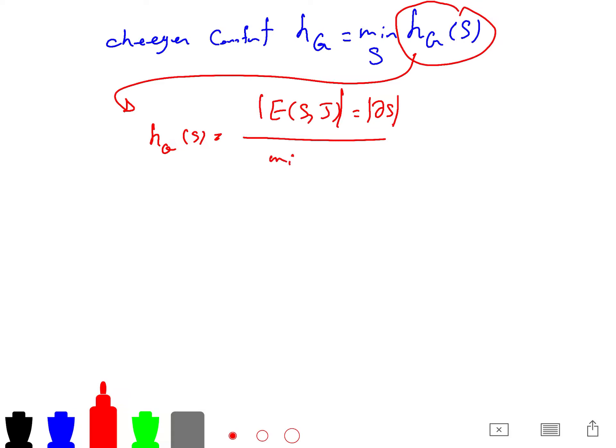divided by minimum of volume of S and volume of S complement. And please observe that this is greater than h(G)*volume(S). So G is connected if and only if h(G) is greater than 0.